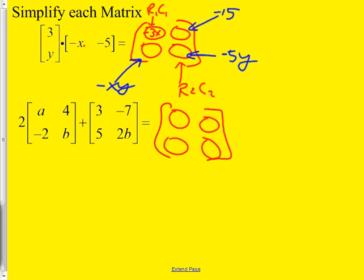The second problem had variables too. The first cell — there's an a in your answer — 2a plus 3, correct. The next one: 8 minus 7 equals 1. Who had 1? Good. The back corner: 1. Correct, good job. And the last cell, Mr. T/Mr. B? 4b — correct. Good, we've got the easy part down.